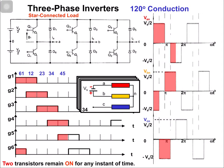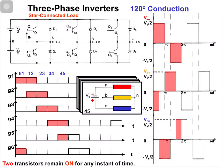In the next switching state 4 and 5: because of switch 4, phase A is connected with the negative terminal. Because of switch 5, phase C is connected with the positive terminal. Phase B is floating. So vcn = +Vs/2, van = -Vs/2, and vbn = 0.